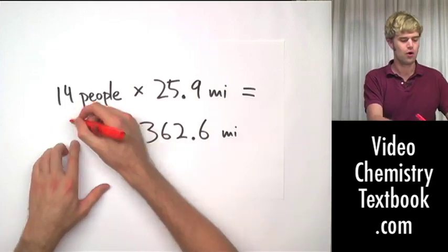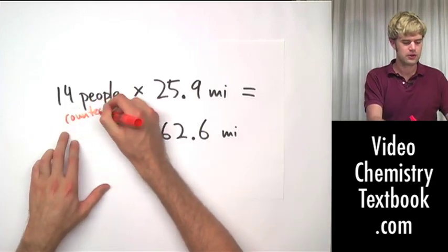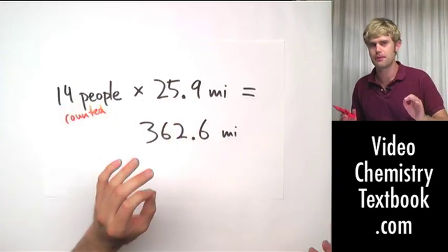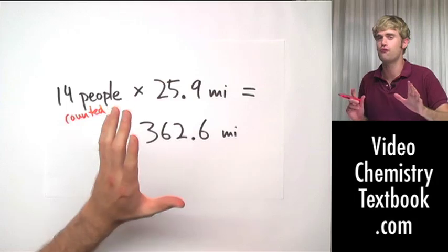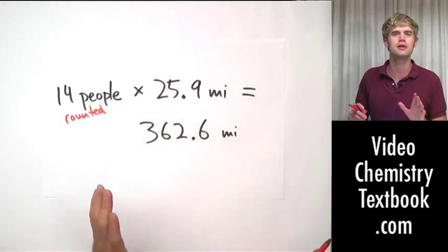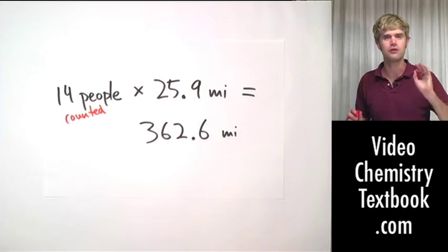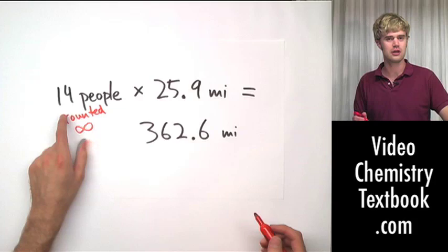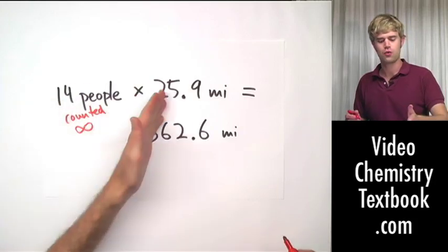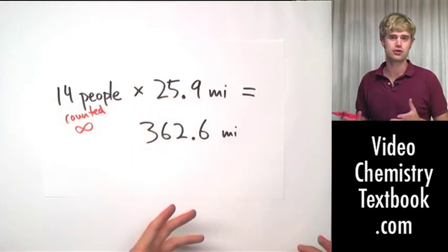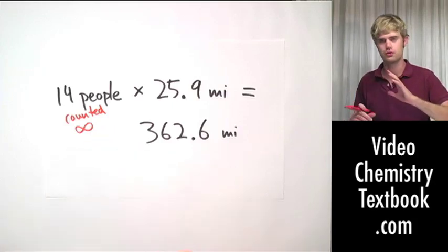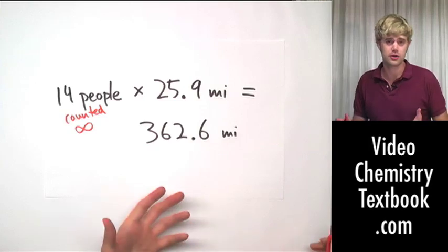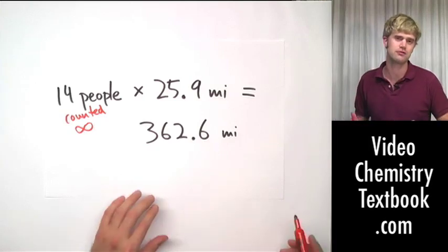How do I round this? I have to look at whether these numbers that I started with were measured, whether there's some degree of uncertainty in them, or whether they were counted, in which case there's no uncertainty. Well, 14 people was counted, which means that I'm completely certain of how many people there are. It's not like if I'd just been a little bit more careful, I would have realized there were like 14.2 people or 14.37 people. No, I counted it. There are exactly 14. So since these were counted, it means that there is an infinite number of significant figures in this part here. 25.9 miles was measured. Maybe it was measured with a pedometer or Google Maps or an odometer in the car or whatever. It doesn't matter. Still, it's a measurement, which means that there is some degree of uncertainty in it. And because there's uncertainty, we're going to have to use significant figures.